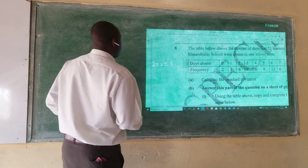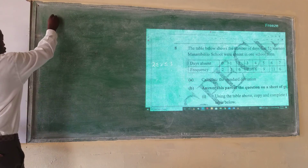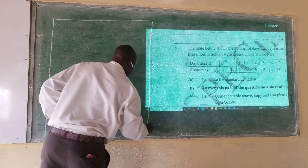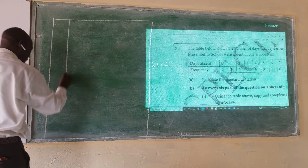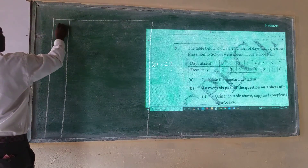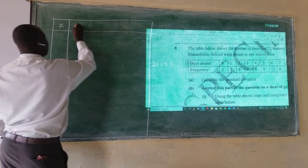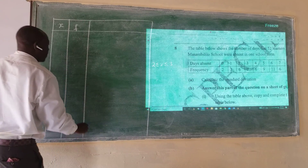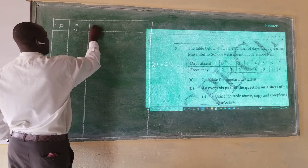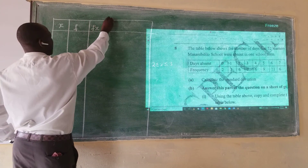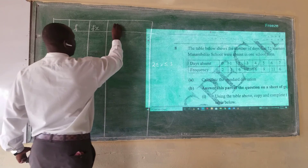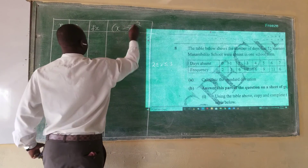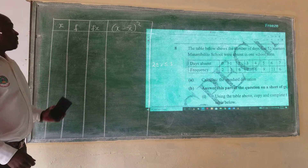The way we do standard deviation, you draw a table. In this table we're going to need a column for x, a column for frequency, a column for fx, and a column for (x minus x̄) squared. So these are the columns that we are going to need.